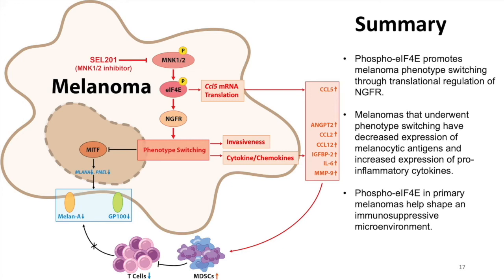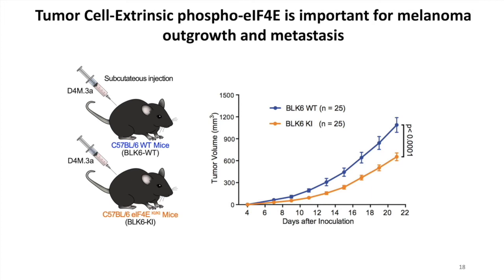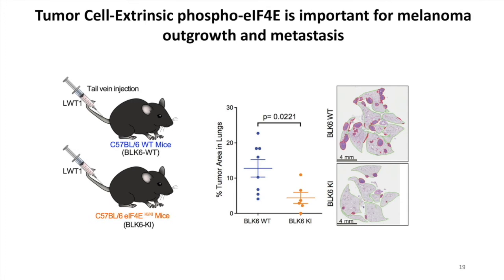So far, we have shown that tumor cell intrinsic Phospho-EIF4E promotes melanoma phenotype switching and shapes an immunosuppressive tumor microenvironment. Next, we investigated the tumor cell extrinsic role of Phospho-EIF4E. When we injected the same tumor cells into wild-type versus knock-in hosts, we showed that after subcutaneous injection, tumors grow slower in the Phospho-4E-deficient background. And after tail vein injection, the tumor cells also form less metastases in the hosts lacking Phospho-4E, indicating a pro-tumorigenic role of melanoma cell extrinsic Phospho-4E.